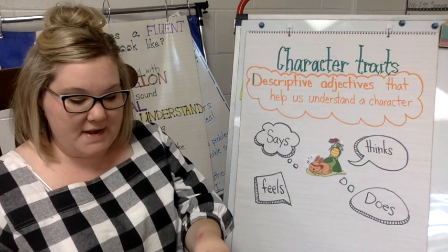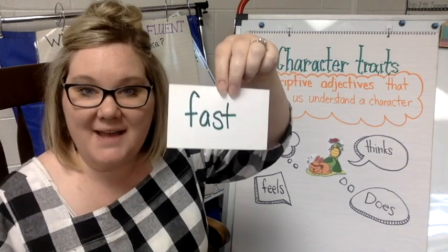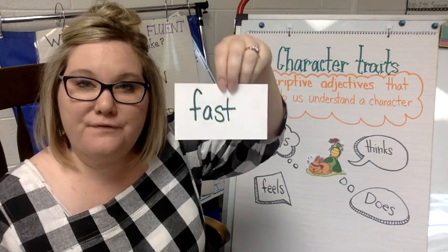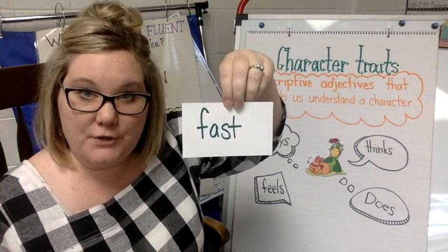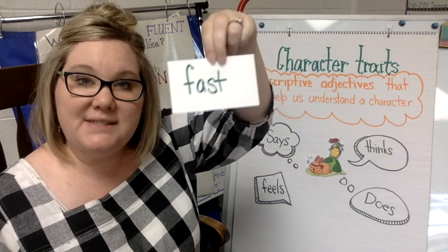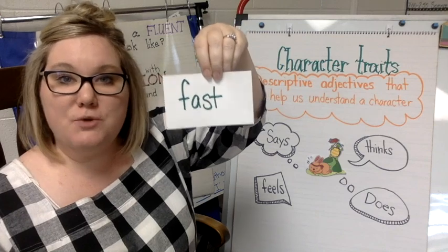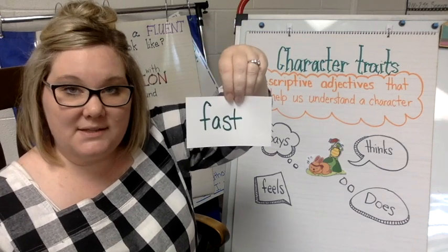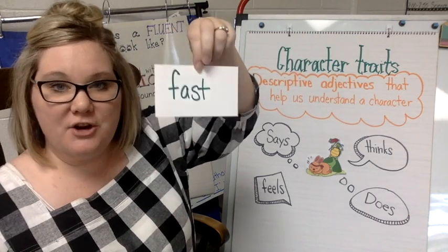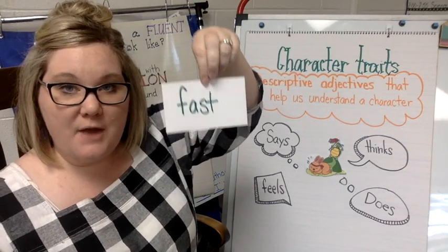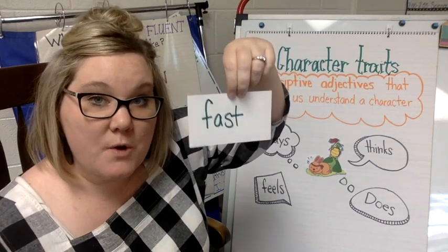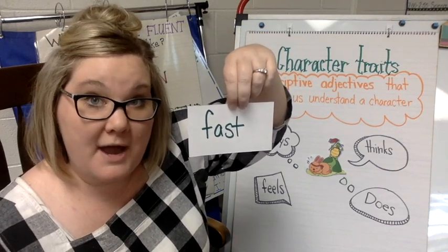First one is fast. Does fast describe the tortoise or the hare? You decide and you're going to write fast next to the picture of your tortoise or your hare. And remember, if I'm going too fast and you need more time to spell, you can always pause the video.